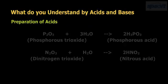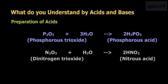P2O3 (phosphorus trioxide) + 3H2O gives 2H3PO3, phosphorous acid. N2O3 (dinitrogen trioxide) + H2O gives 2HNO2, nitrous acid.